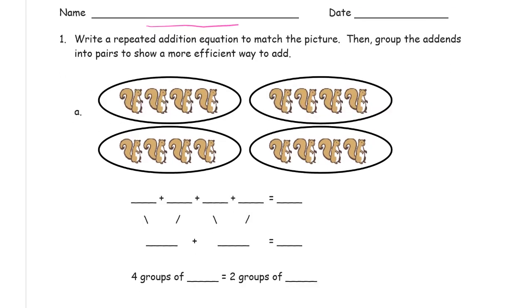Write a repeated addition equation to match the picture. Repeated addition is adding the same number over and over again, the same addend. And then it says group the addends into pairs to show a more efficient way to add.